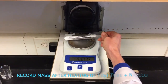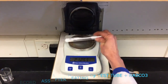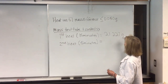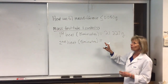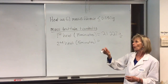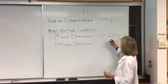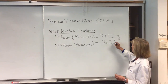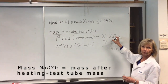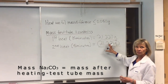After heating for 15 minutes, the mass of the sodium carbonate is 21.227 grams — a substantial drop from 22.272 grams before heating, because we lost carbon dioxide and water to the atmosphere. After a second five-minute heating, the mass changed only slightly to 21.226 grams — a difference of just 0.001 grams — confirming all water and carbon dioxide were released in the first heating. We now have our experimentally produced mass of sodium carbonate to compare with our theoretical value.